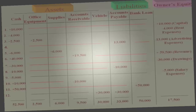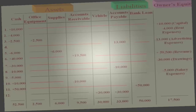To check you got everything correct, add up each column. Remember the accounting equation: assets equals liabilities plus owner's equity. If you add up all the asset columns, it should come to $100,500. If you add up liabilities and owner's equity, you get the same number. The beauty of the accounting equation is that even one mistake will cause it not to balance.